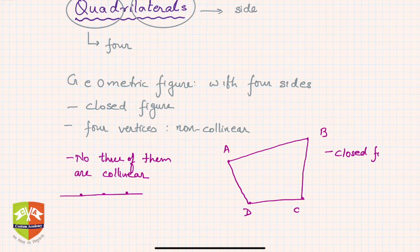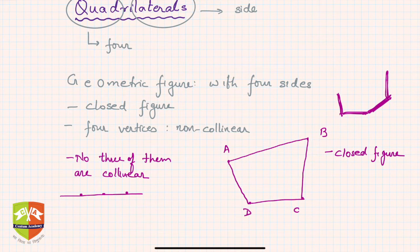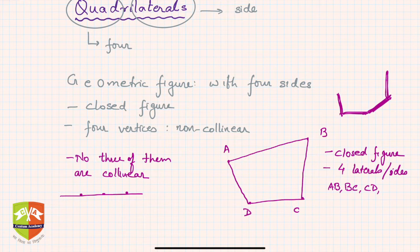You must be wondering what an open figure is. An open figure has three sides but they are open — one side, a second side, a third side, but the fourth one doesn't exist. A quadrilateral, however, is a closed figure with four sides, namely AB, BC, CD, and DA.